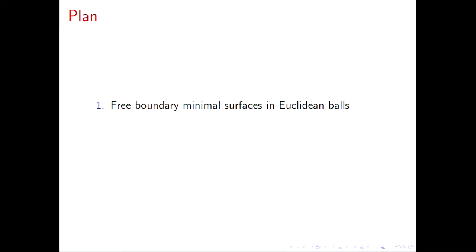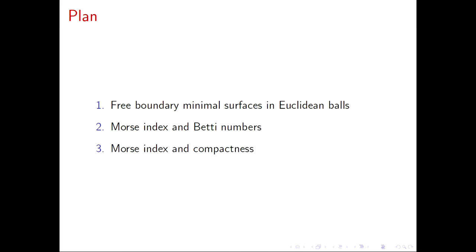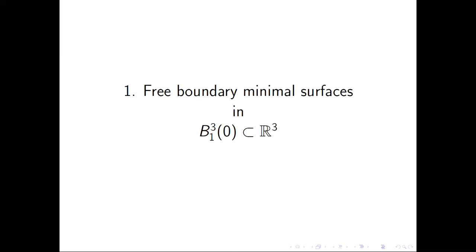The plan for the talk is the following. First, I want to study free boundary minimal surfaces in the simplest and most symmetric domains — the balls in Euclidean space — and see many examples and discuss some classification results. Then I want to go to a more variational perspective and understand how the MOS index controls the topology of the minimal hypersurface. Finally, I want to study what happens when you have a sequence of compact free boundary minimal surfaces with controlled MOS index.